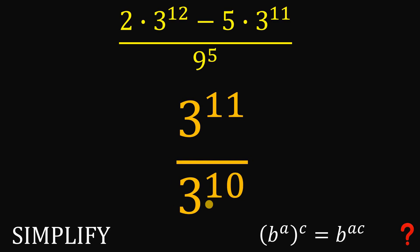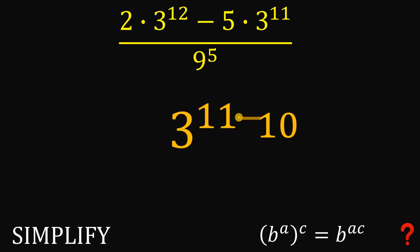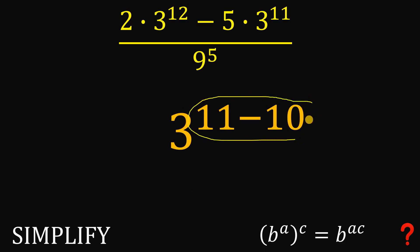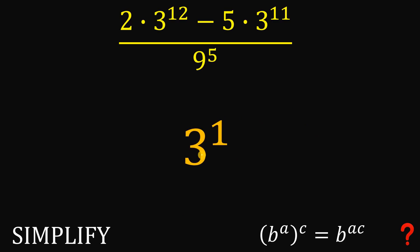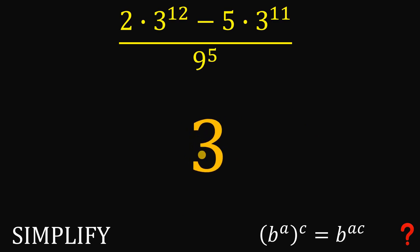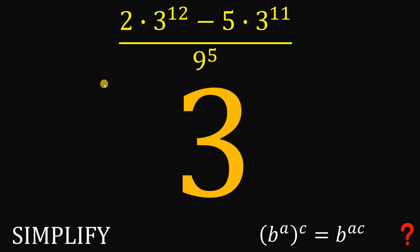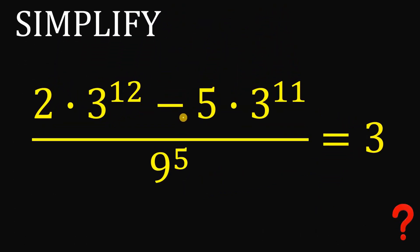Now using the laws of exponents, 3 raised to the power of 11 over 3 raised to the power of 10: since we have the same base, this equals 3 raised to the power of 11 minus 10, and 11 minus 10 is 1. So 3 raised to the power of 1 is just 3. That is the simplified value of the expression: 2 times 3 raised to the power of 12 minus 5 times 3 raised to the power of 11, all over 9 raised to the power of 5, equals 3.